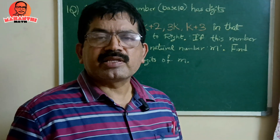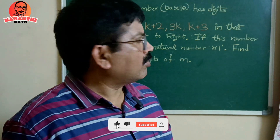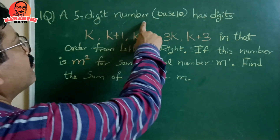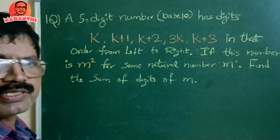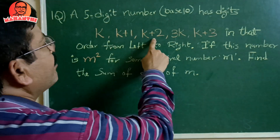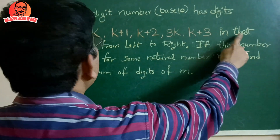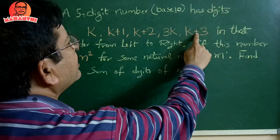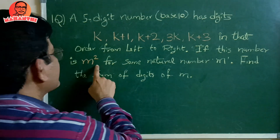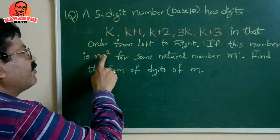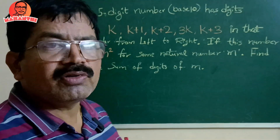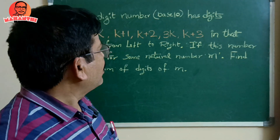In the previous video we discussed the properties of perfect squares. Now we solve problems on perfect squares. This question: a five-digit number, base 10 by default, has digits k, k+1, k+2, 3k, k+3 in that order from left to right. If this number is m squared — that is, a perfect square for some natural number m — find the sum of digits of m.